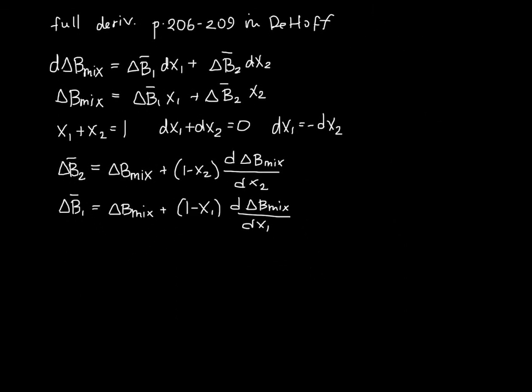So let's just look then at this equation. We can find the partial molar property from just B mixing, which is just a number, and then the slope of the B mix curve as a function of X2 or X1.